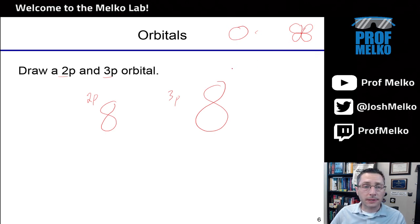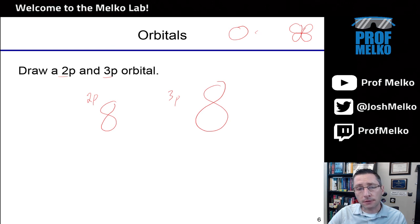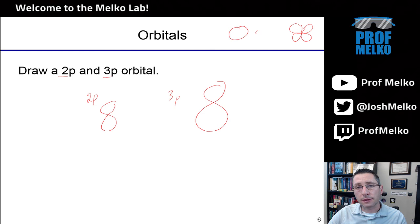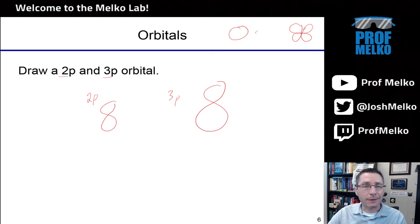That'll do it for the practice problems here. This summarizes many concepts related to models of the atom — from Rutherford and atomic notation, up through Bohr and sublevels and energy levels, then to the quantum mechanical model of Heisenberg and others who discovered orbitals and probabilities. For more practice problem videos, subscribe to my YouTube channel or check out my weekly office hours on Twitch, where I do practice problems, review for exams, and answer chemistry questions. We also discuss science news like climate change, science and politics, physics and space. See you next time.